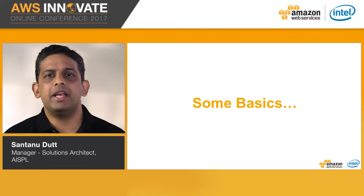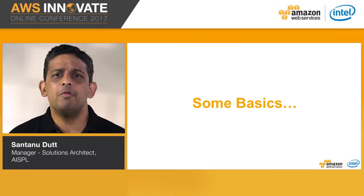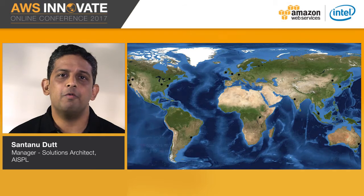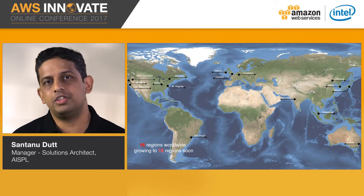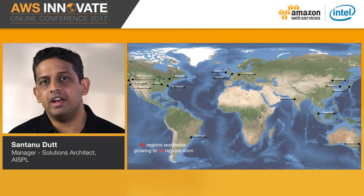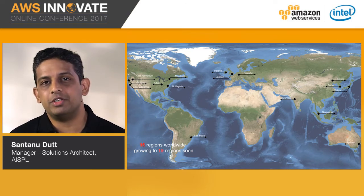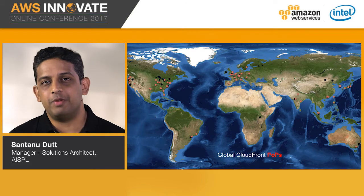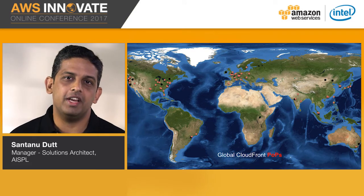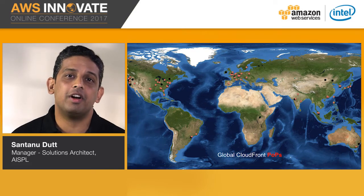Let's get some basics right. We actually have 16 regions across this planet with three more coming up in France, China, and Sweden. Each of these regions have multiple availability zones, or AZs. In addition, on the infrastructure side we have 70 plus points of presence, or edge locations globally, as part of a CDN service called Amazon CloudFront.